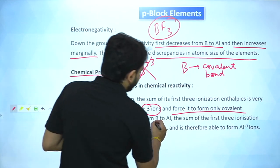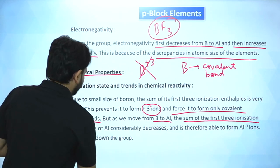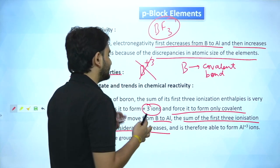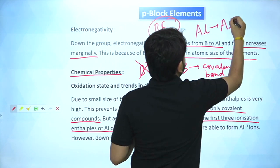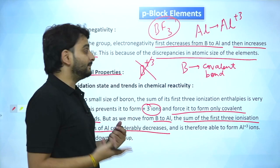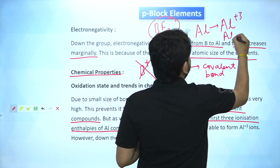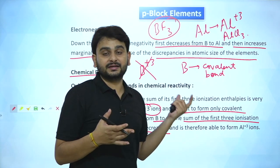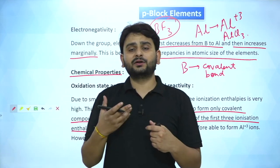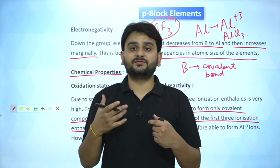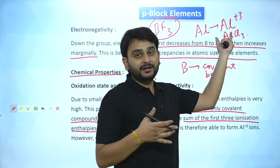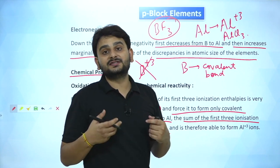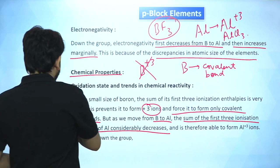Moving from boron to aluminium, the sum of the first three ionization enthalpies decreases considerably, allowing aluminium to form Al³⁺. Because Al³⁺ can form, aluminium can form AlCl₃, which has ionic character. However, due to polarization and polarizability (Fajans' rules), there is also significant covalent character in the Al–Cl bond in AlCl₃ — much more than in MgCl₂ or NaCl, for example.